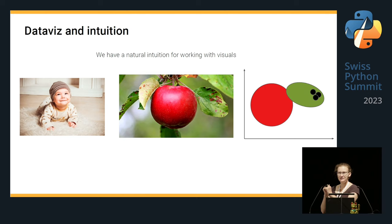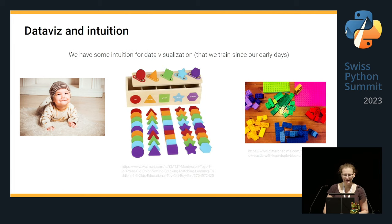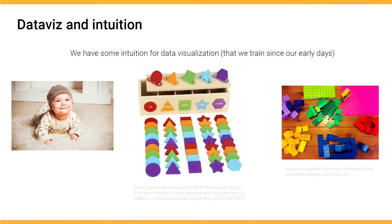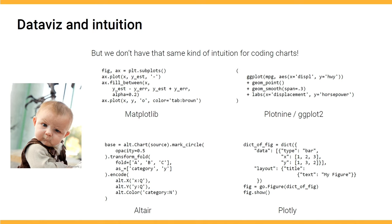There is something about data visualization and intuition that I want to say upfront. We have a natural intuition for working with visuals because we are born with hardware that is pre-configured to help us, for example, find food and distinguish those important nutritious objects out of our environment. Now, in data visualization, we are kind of using the same hardware, but instead of like apples, we are looking at red circles or green objects or dark points. We also have some intuition for data visualization, although we do train it since our very early years.